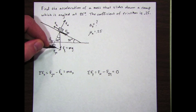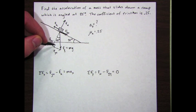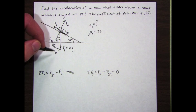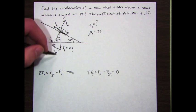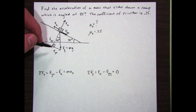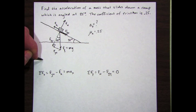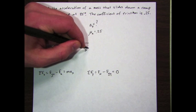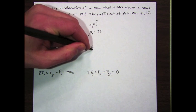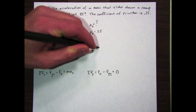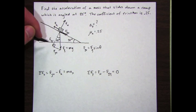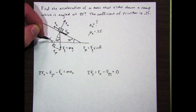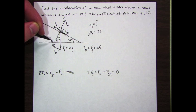If I take f g times the sine of 35, that will give me f g x, because f g x is the opposite side of that angle. It's not the adjacent. I know before we always said x goes with cosine, but that is not the case with these incline problems.